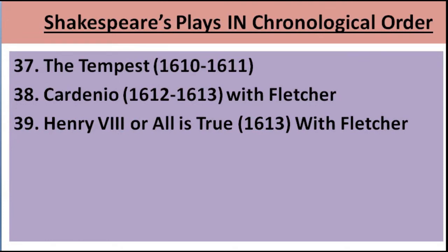Shakespeare has written 37 plays, but as you can see on the screen, there are also plays numbered 38 and 39. These two plays were also written by William Shakespeare but in collaboration with Fletcher — that is why they are not counted among the 37 plays. If the question is asked how many plays were written by Shakespeare, the answer is 37. Including the collaborations with Fletcher, it will be 39. The 38th was Cardenio, written in the year 1612 to 1613 with Fletcher. The 39th and last was Henry VIII — also known as All Is True — written in 1613, also in collaboration with John Fletcher.